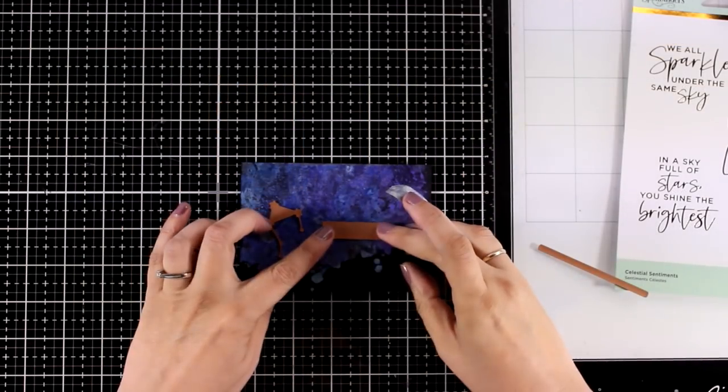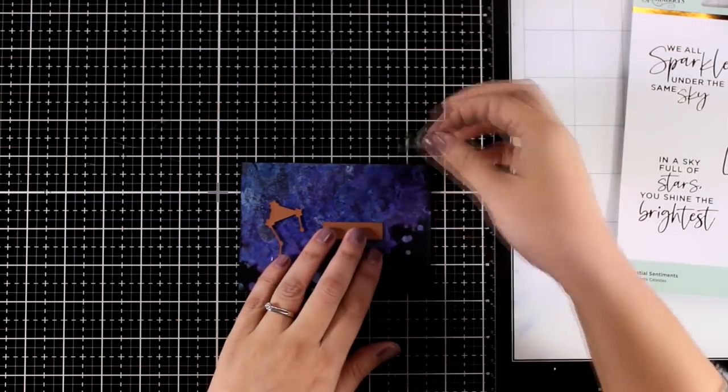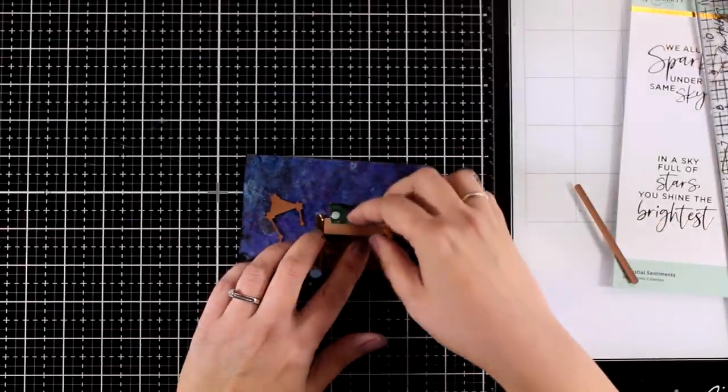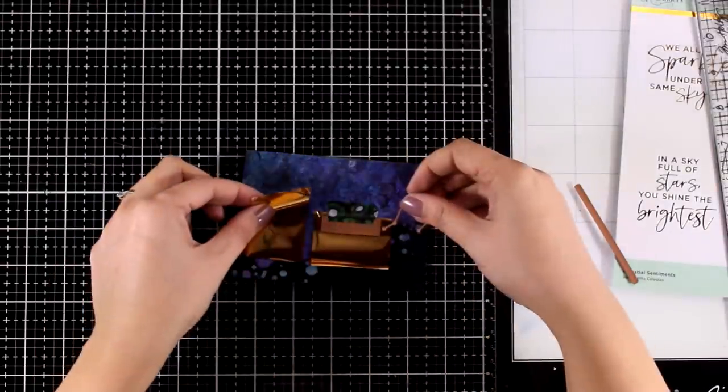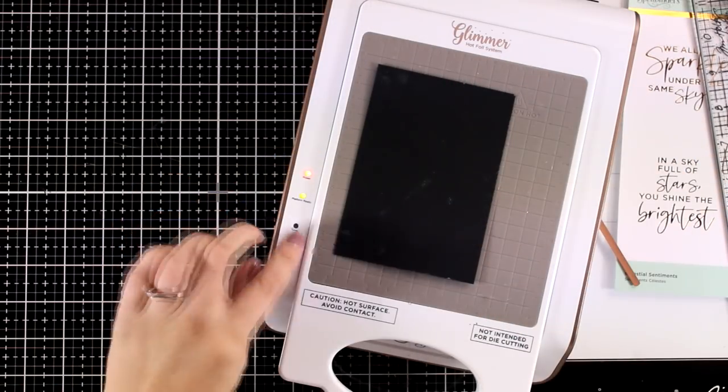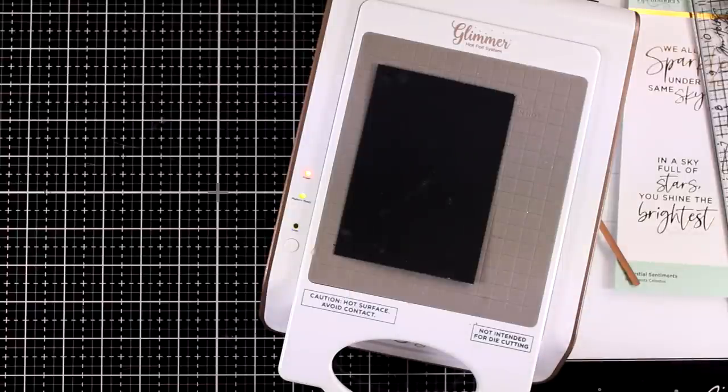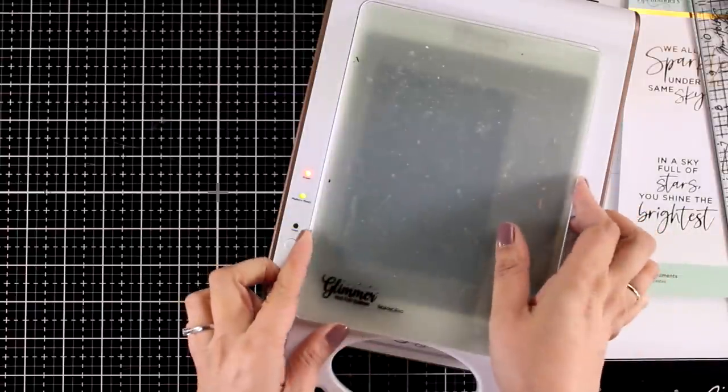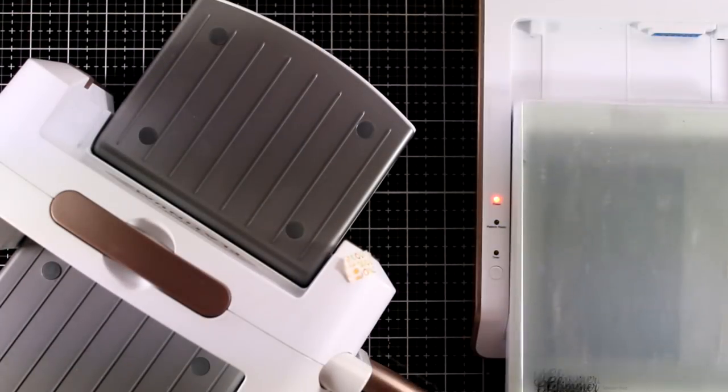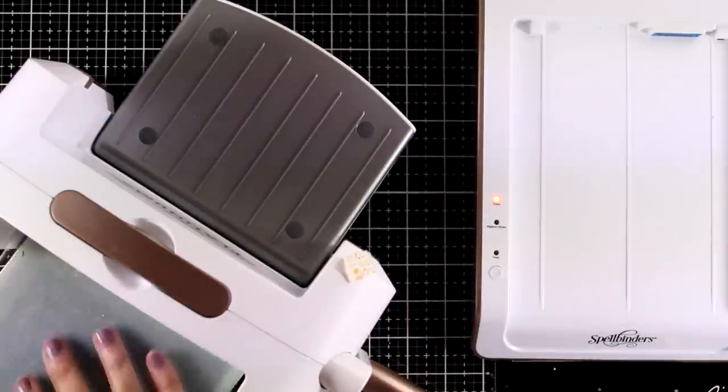For my first card I picked the background that is inked with alcohol inks. I placed on top the plate that says Libra as well as the constellation. I'm using gold foil for this card and I think it's going to look lovely on top of that background. And I am securing everything down with washi tape just to make sure that nothing is going to move on me. I'm going to place everything on my glimmer platform waiting for that to warm up and then I'm going to run it through my die cutting machine.